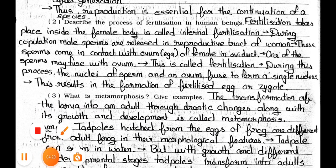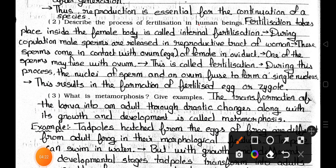Question number 2: Describe the process of fertilization in human beings. Answer: Fertilization takes place inside the female body, which is called internal fertilization. During copulation, male sperms are released in the reproductive tract. These sperms come in contact with the ovum (egg) of the female in the oviduct. One of the sperms may fuse with the ovum — this is called fertilization. The nuclei of sperm and ovum fuse to form a single nucleus, resulting in the formation of a fertilized egg or zygote.